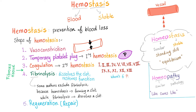Hemostasis — blood stable — meaning stopping the bleeding, prevention of blood loss. The steps of hemostasis are: vasoconstriction, temporary platelet plug, and coagulation. Vasoconstriction and the platelet plug constitute primary hemostasis; coagulation is secondary hemostasis. We have talked about all of these before. Now, we have fibrinolysis.